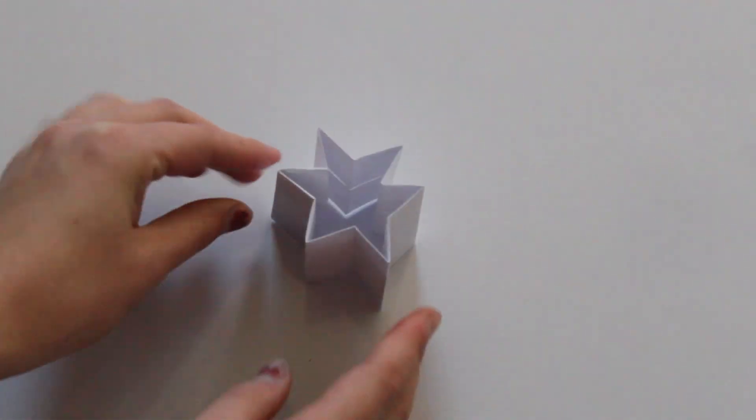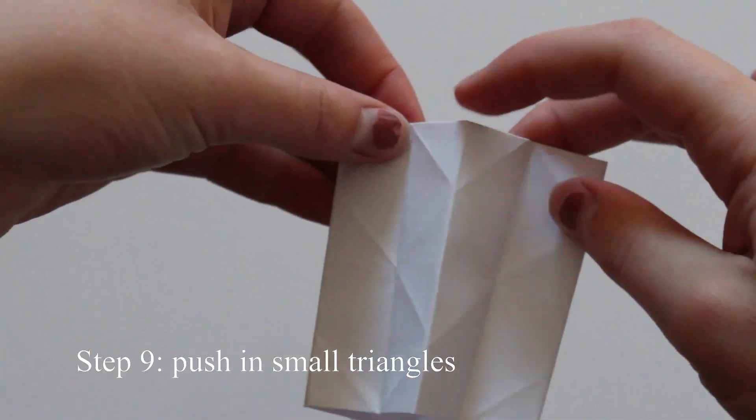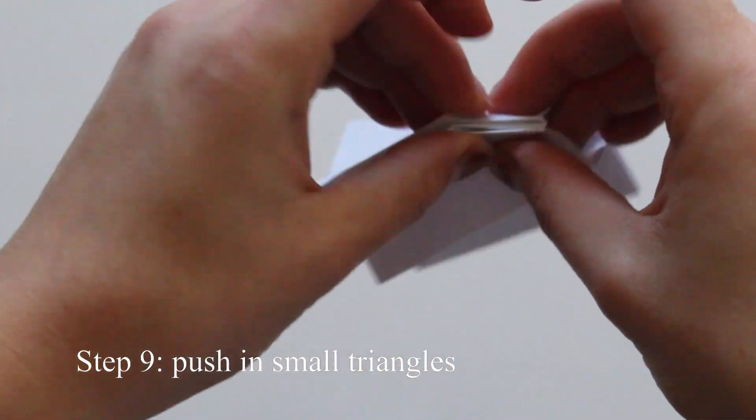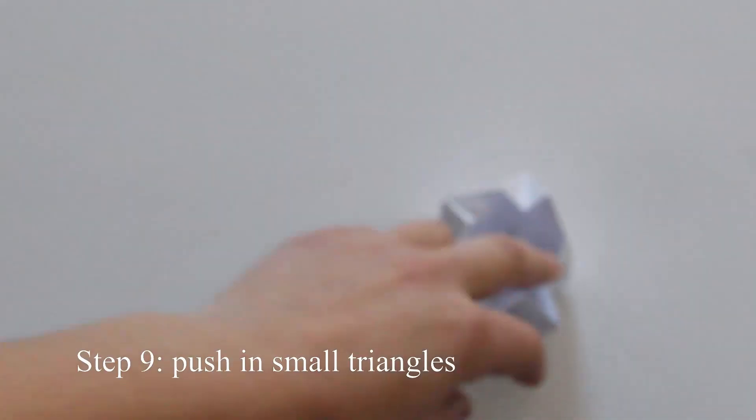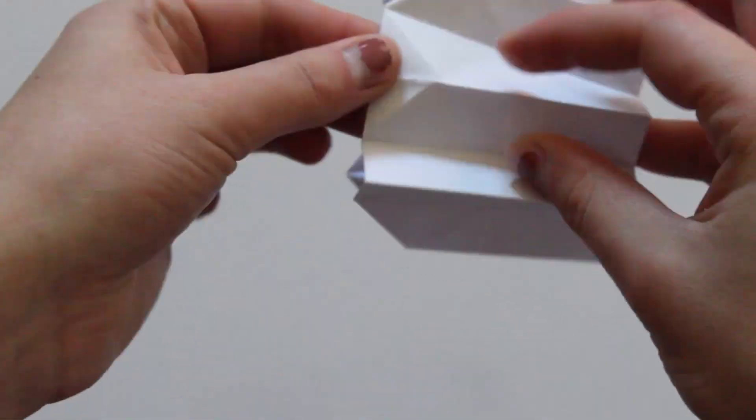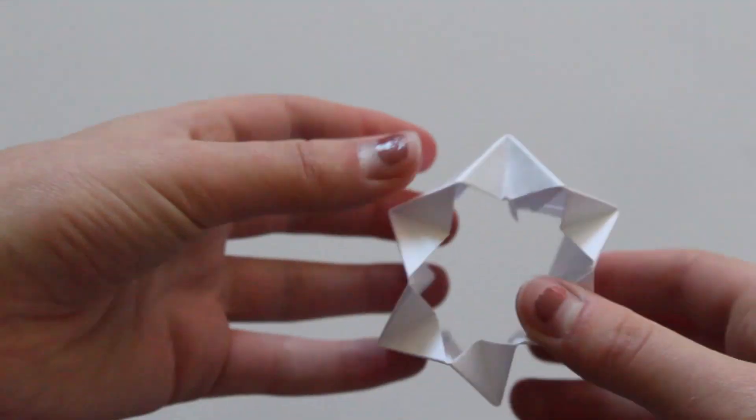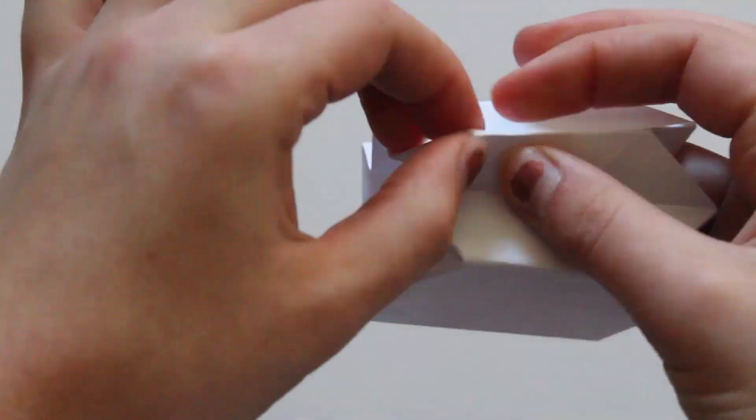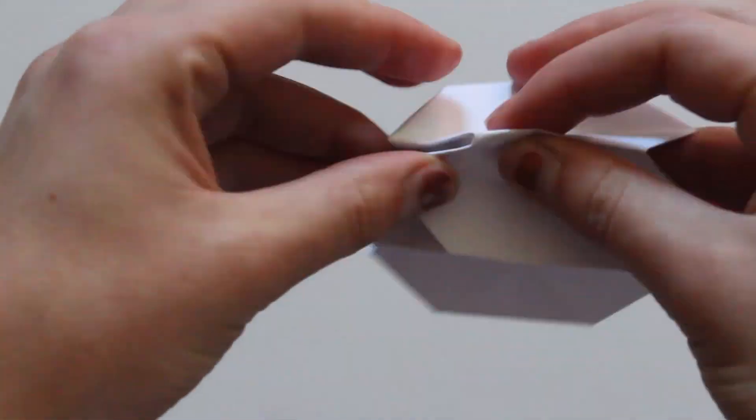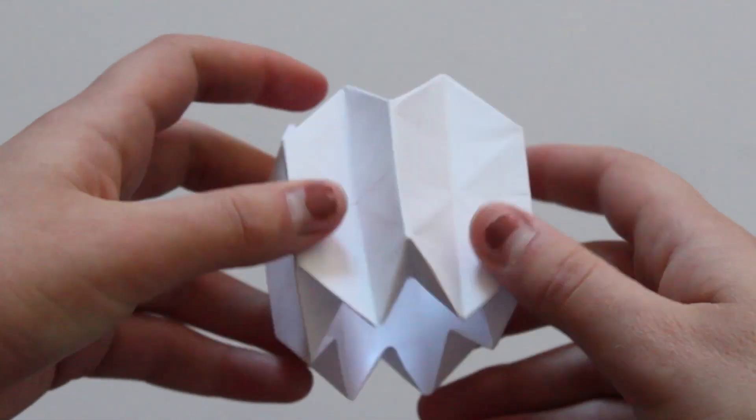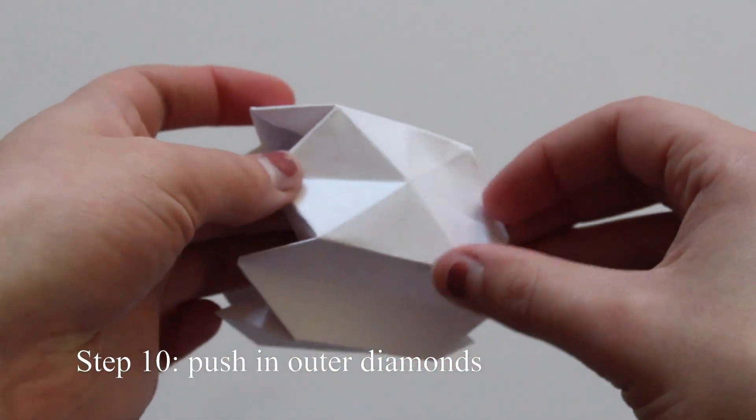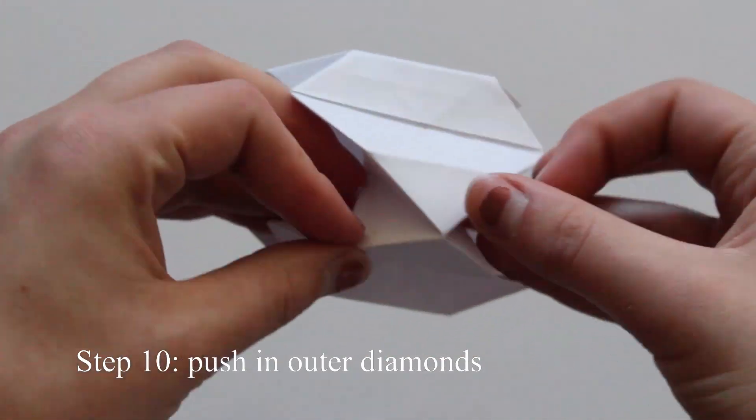And then our next step is to push in the small triangles on the outer edge. This should be where the crease points out, and we're going to do that both on the top and bottom.